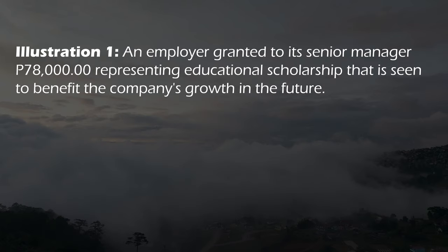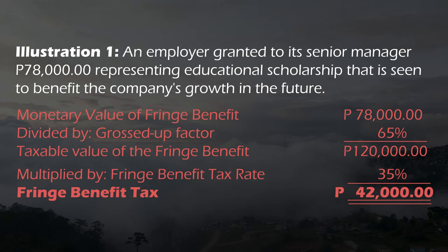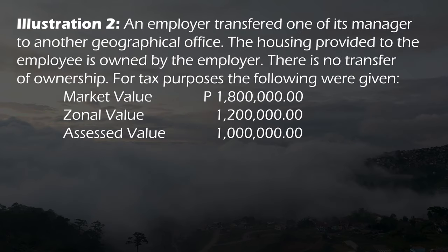Let's go to the first illustration. The fringe benefit given by the employer is educational assistance of 78,000. From the monetary value of 78,000, we divide by the gross-up factor of 65, arriving at a taxable value of 120,000. We then multiply by the fringe benefit tax rate of 35%, so the fringe benefit tax is 42,000.